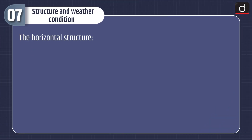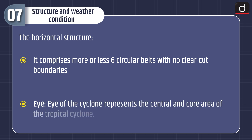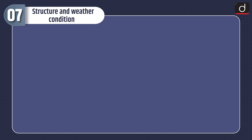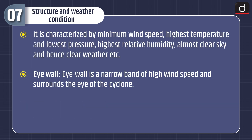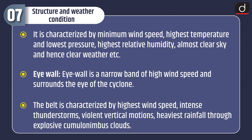Moving on to structure and weather condition — the horizontal structure comprises more or less six circular belts with no clear-cut boundaries. The eye of the cyclone represents the central core area, characterized by minimum wind speed, highest temperature and lowest pressure, highest relative humidity, and almost clear sky. The eye wall is a narrow band of high wind speed surrounding the eye of the cyclone, characterized by highest wind speed, intense thunderstorms, violent vertical motions, and heaviest rainfall through explosive cumulonimbus clouds.